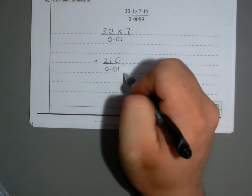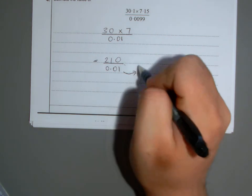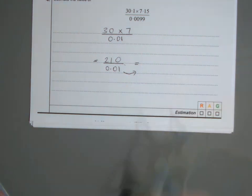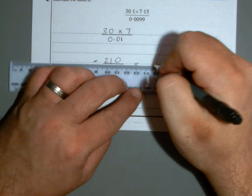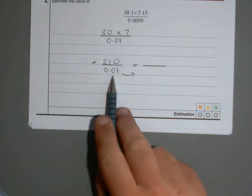You can make the bottom number whole. Think: what do I have to multiply by to make it whole?